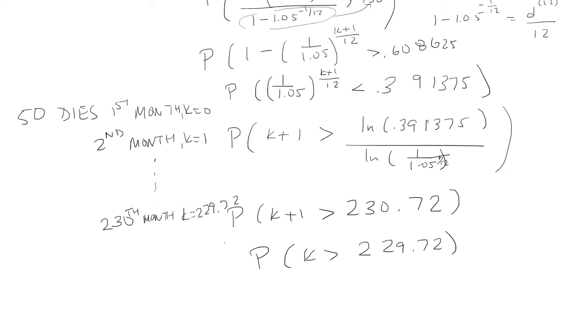So keep in mind this is months. We want to convert this into years. So we're going to take 230 divided by 12 and we're going to get 19.1667. So probability Y is greater than 15,000 is the same thing as surviving 19.1667 years if you're age 50.